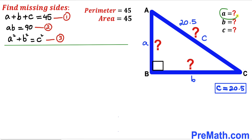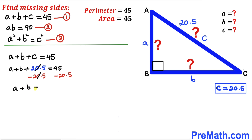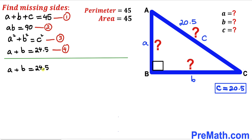Now we are going to find the values of a and b. Going back to equation 1 and substituting c = 20.5, we subtract 20.5 from both sides. So our a plus b value turns out to be 24.5. I'll label this as equation number 4. From equation 4, I can write a equals 24.5 minus b.